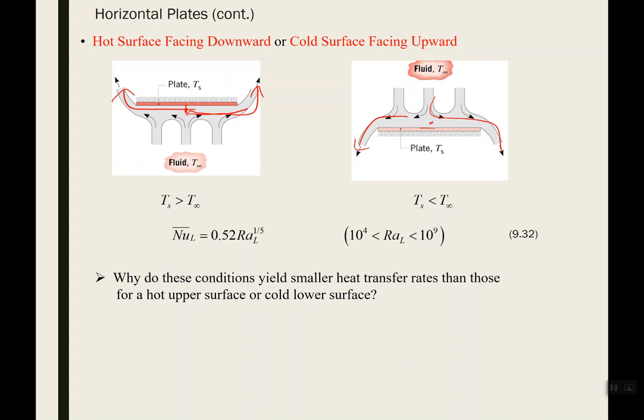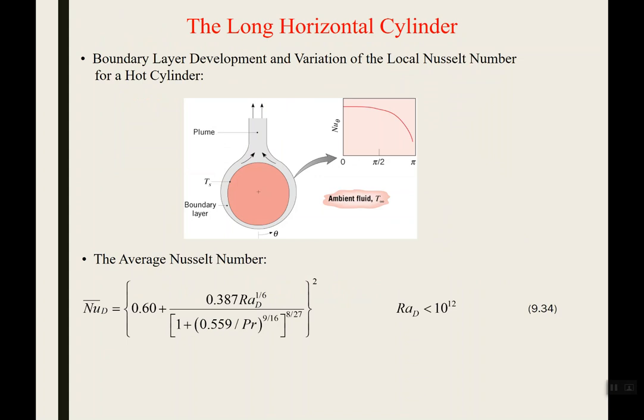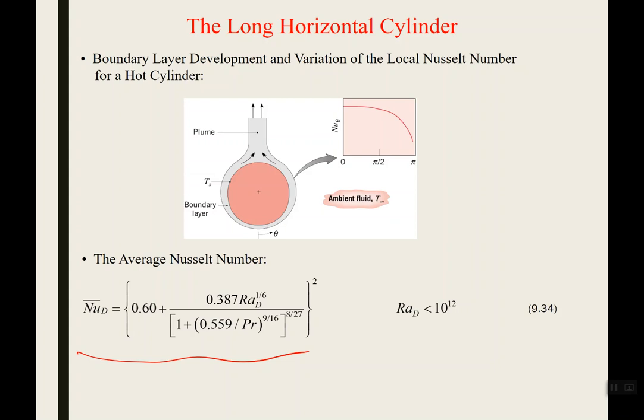Another geometry is a long horizontal cylinder — 'long' meaning everything is constant in the transverse direction, so you focus on cross flow around the cylinder. The average Nusselt number is a function of the Rayleigh number. This correlation was validated experimentally for Rayleigh numbers less than 10 to the 12th. These are empirically derived correlations that tend to be transferable from fluid to fluid because everything is expressed in terms of dimensionless numbers like the Nusselt number.